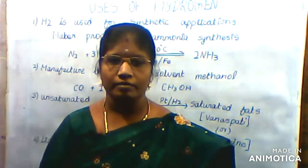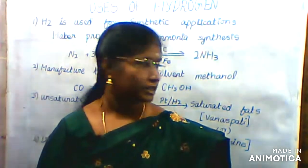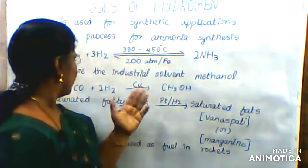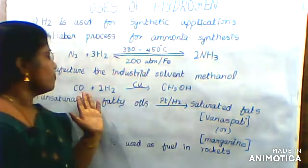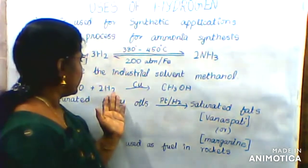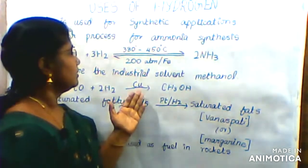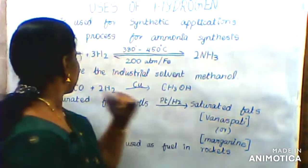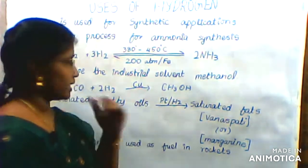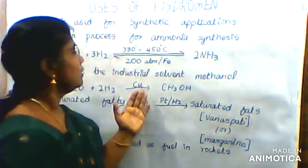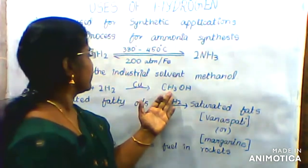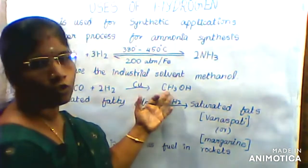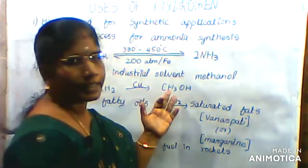Methanol is very useful. Hydrogen is very useful. Carbon monoxide is used with a carbon catalyst. Carbon monoxide reacts with hydrogen to produce methanol, which is used as an industrial solvent.